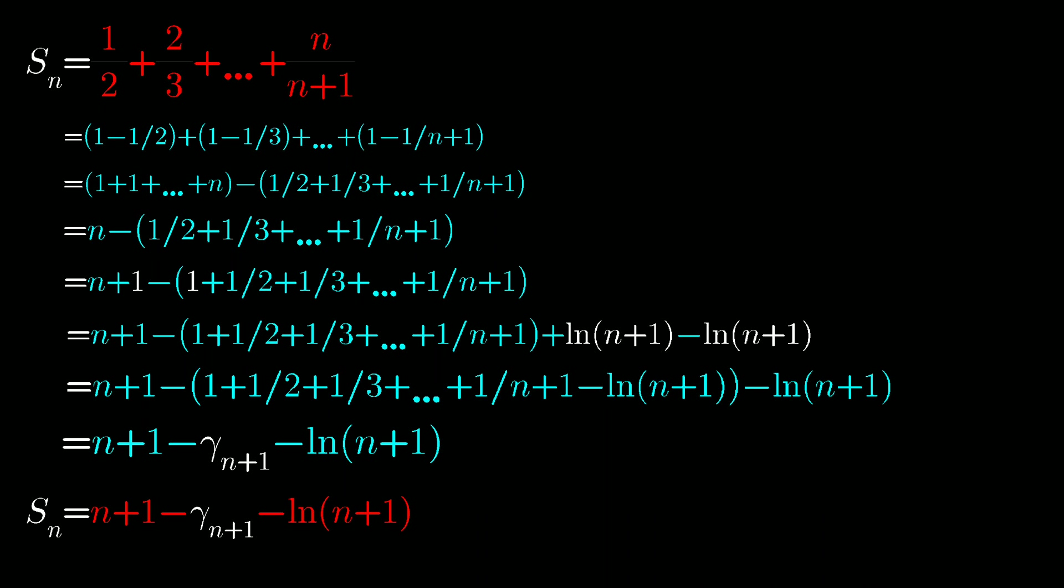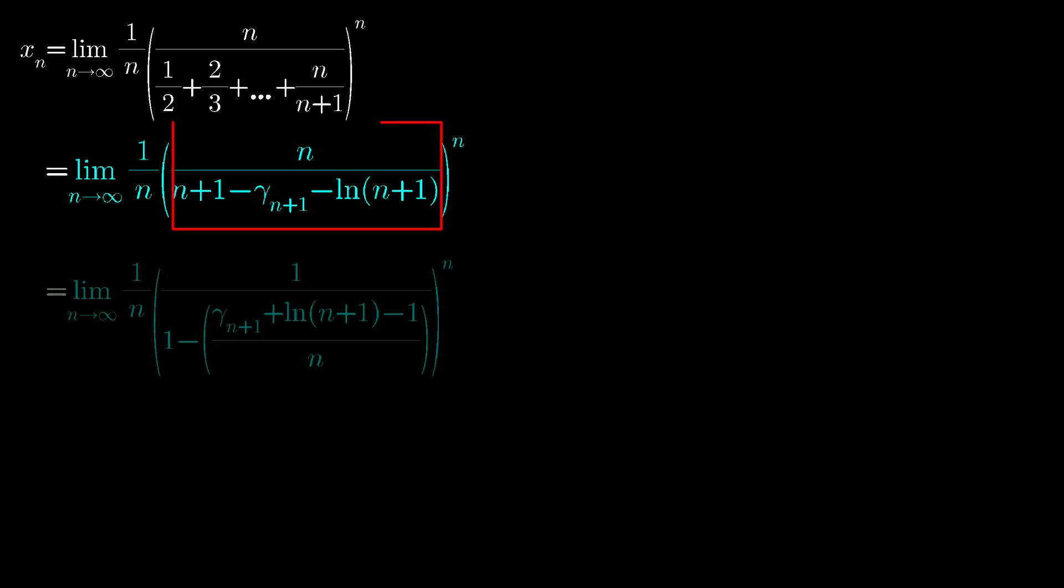Now put the value of Sn into the limit. Now divide numerator and denominator in the bracket by n. From now we cannot write this bracket again and again, so just let this bracket as an.